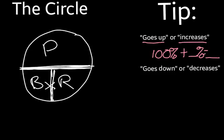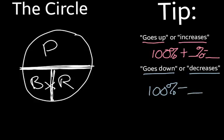Now if you hear the terms 'goes down,' 'decreases,' or 'drops,' you're going to do the opposite. You're going to take the 100% that you would have had, and subtract that percentage to get your new rate.